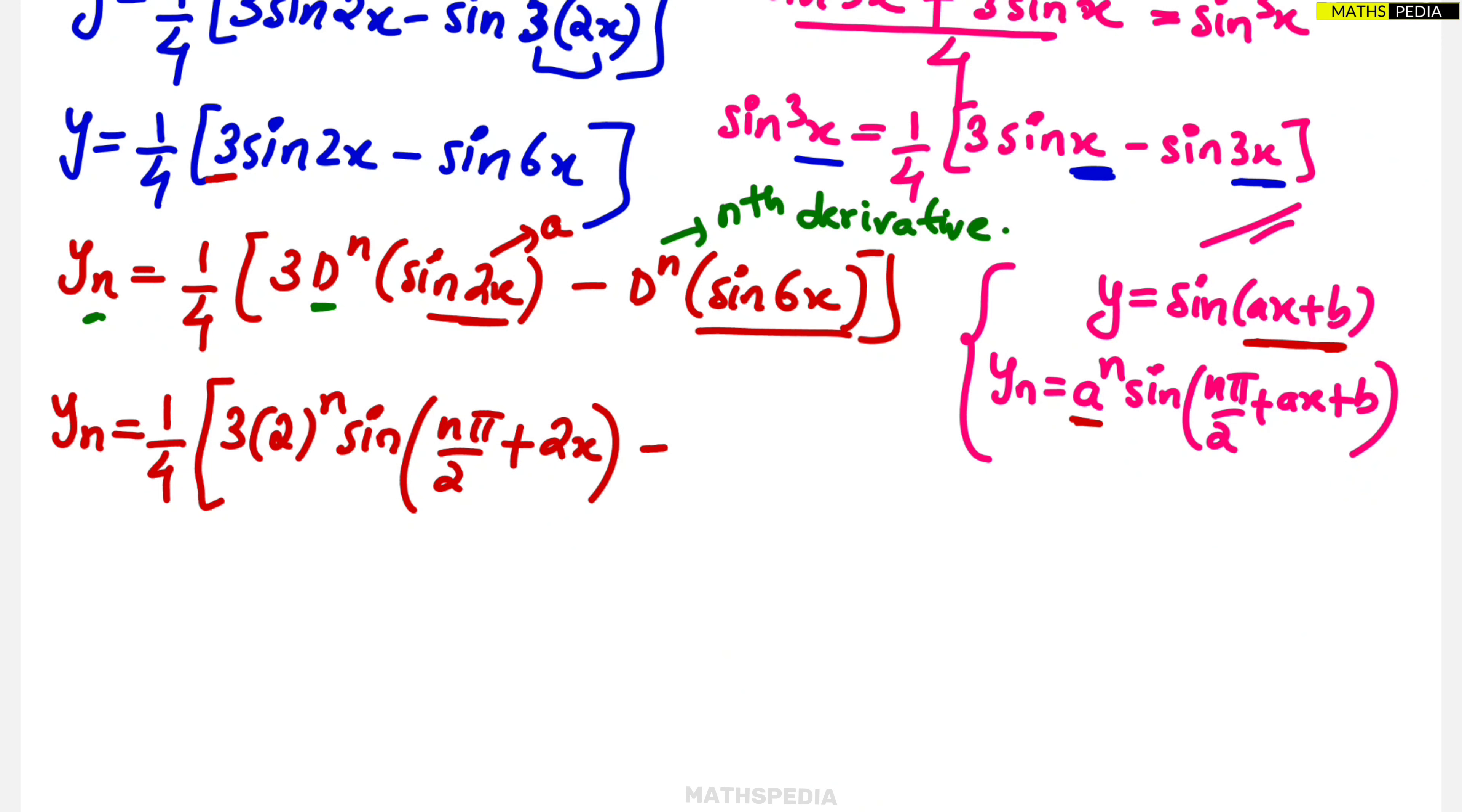Minus sin 6x. What is a term here? A term is 6, so it will be 6 power n sine n pi by 2 plus 6x. Done. This will be the final answer. If you want you can take 2 power n as common, but not required. This is the formula.